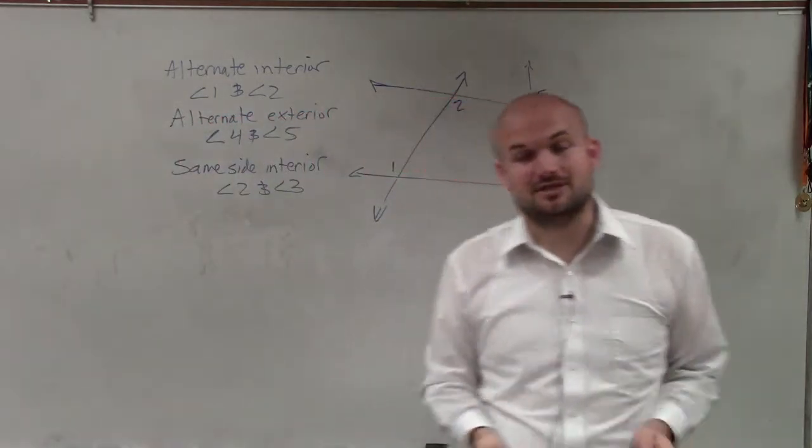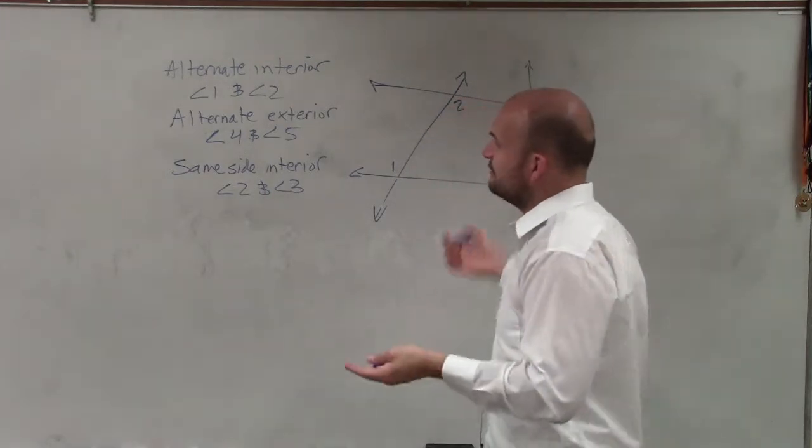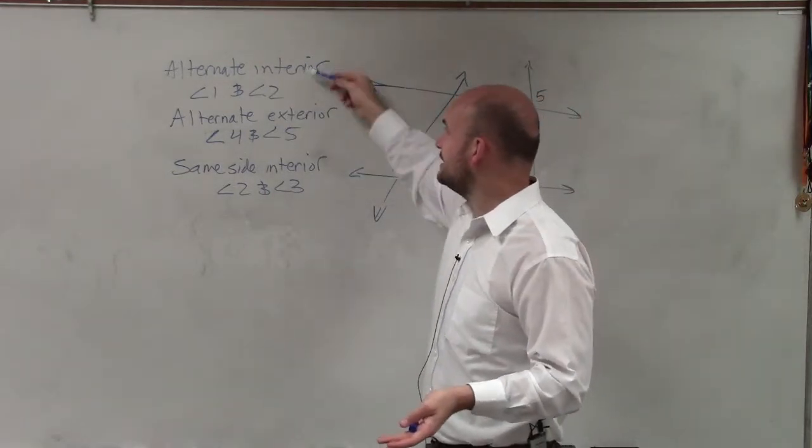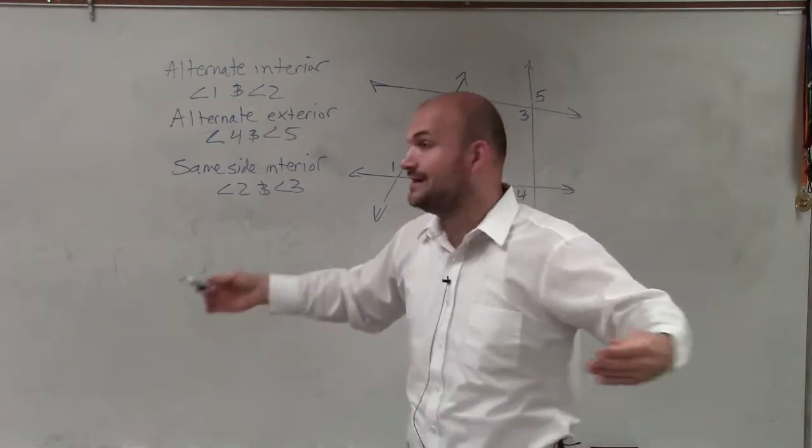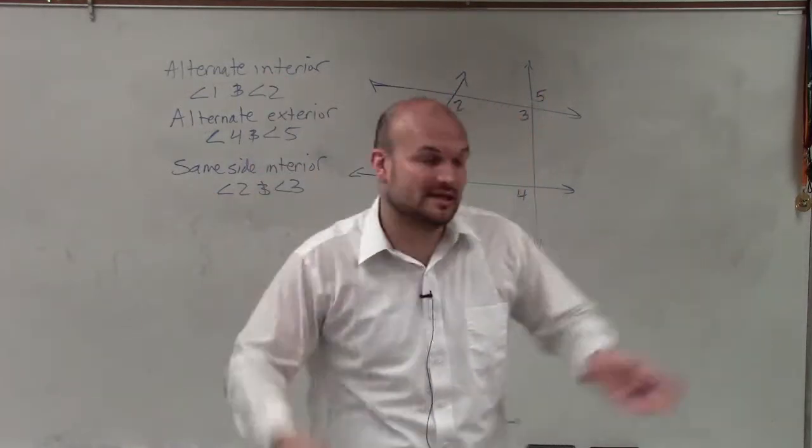And the last one is corresponding, which a lot of students always forget and have trouble with. But just remember, if you can remember these two, you can see the interior and exterior kind of give away what those angles are. One is alternating, one same-side, either the exterior or interior.